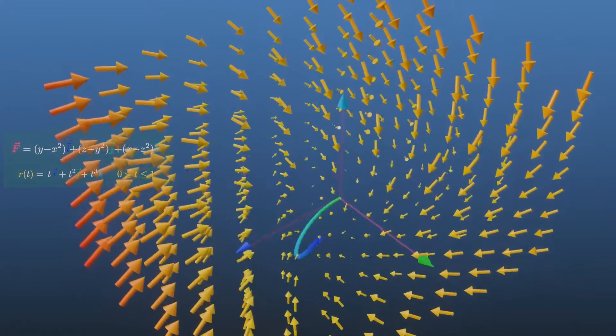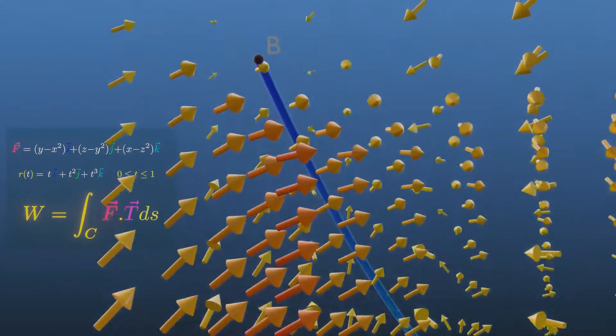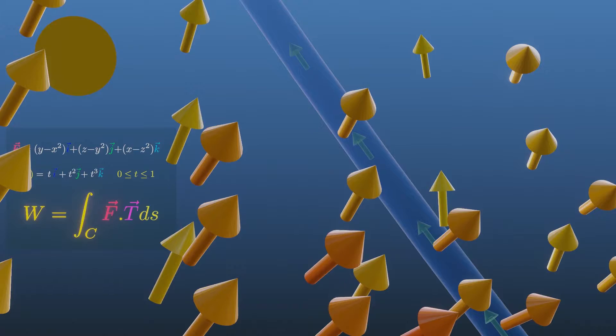The formula to calculate the total work done on moving an object from point A to point B is this line integral. Here, F is the force vector of the field, T is the unit tangent vector of the curve, and Ds is arc length.